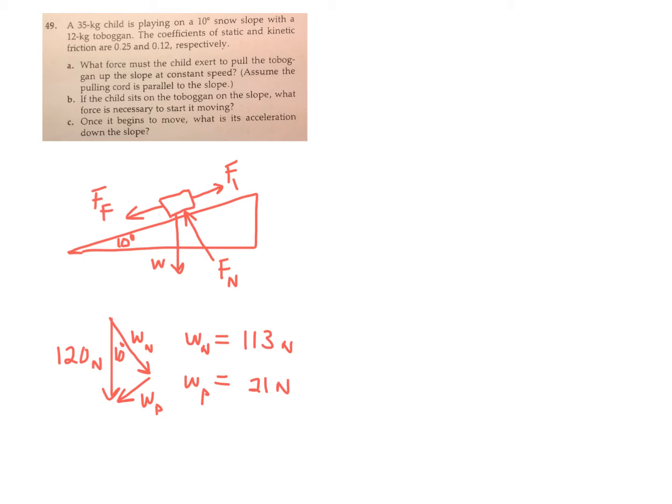Pulling the sled up the slope with the force of, I'm calling it F sub 1. Force of friction is restricting the motion. The normal force and the weight vector, which I've broken down into components.